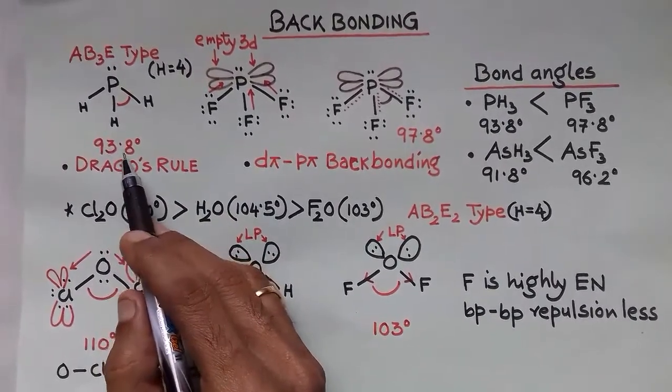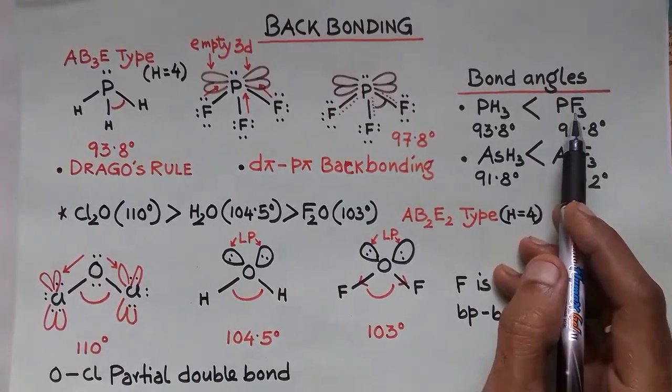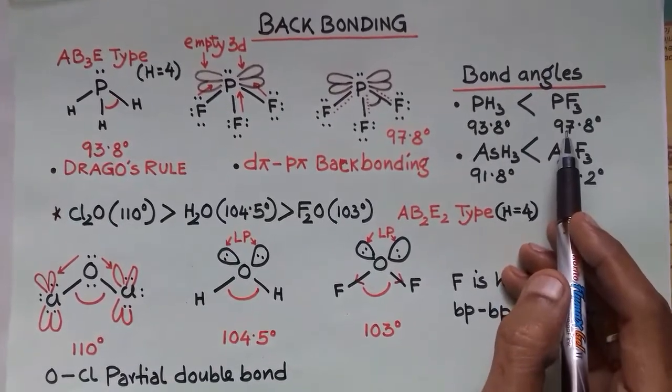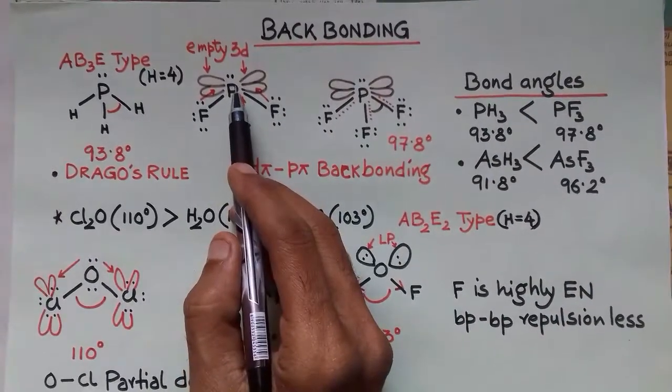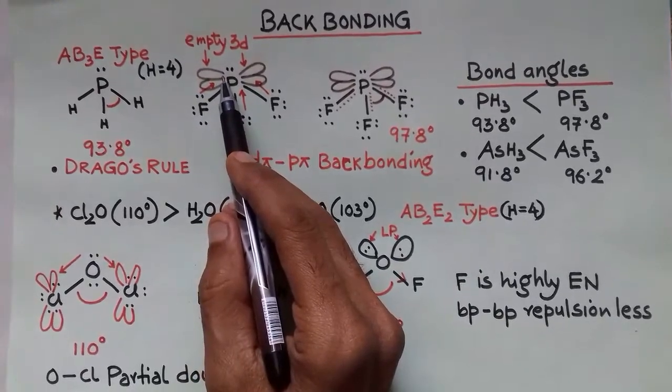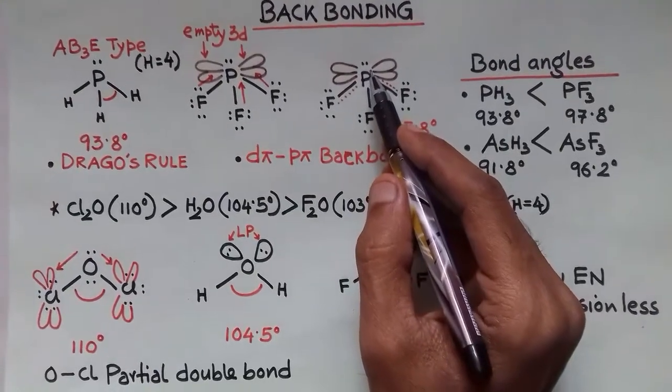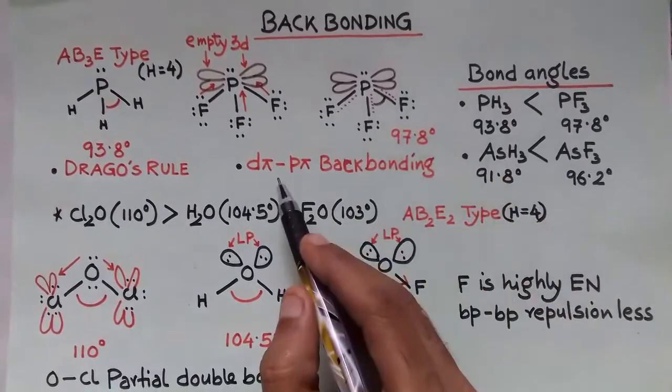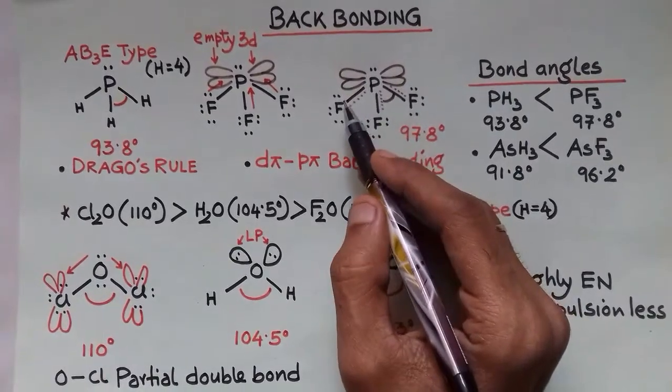Bond angle comes around 93.8 degrees according to Drago's rule. But in case of PF3, fluorine is the strongest electronegative element, yet bond angle increases to 97.8. Phosphorus has empty 3d orbitals. Lone pairs are back donated towards empty d orbitals, forming phosphorus-fluorine partial double bond character. D pi-pi backbonding creates some double bond between phosphorus and fluorine.